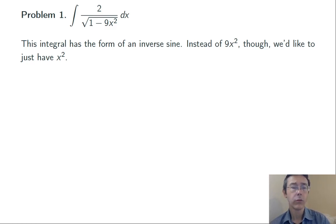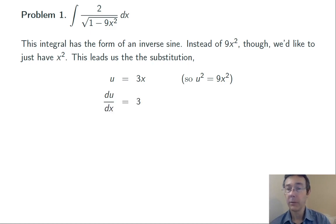So we want to do a u substitution and we want to do a u substitution that's going to remove that 9x squared and replace it with x squared. The one we want is u equals 3x because then u squared is 9x squared and the denominator will be exactly what we want. Once we make that choice of u, the next couple steps are mechanical.